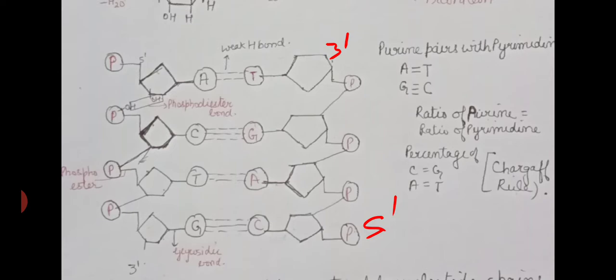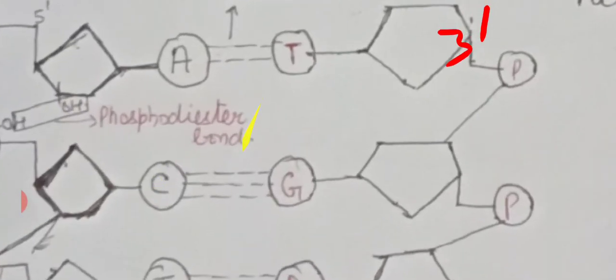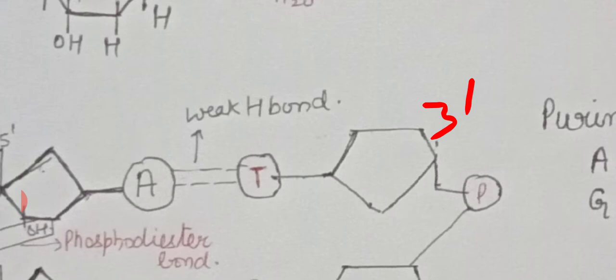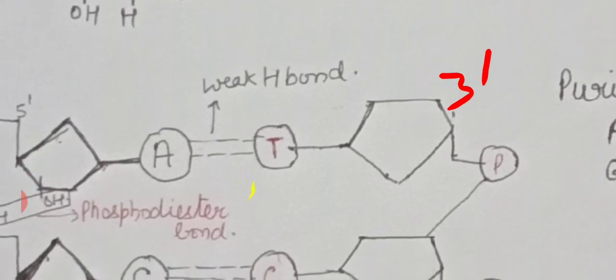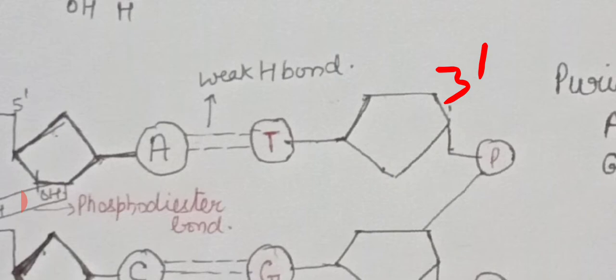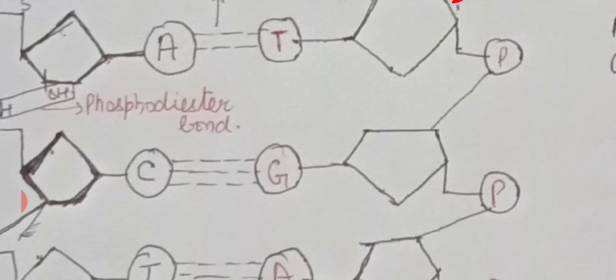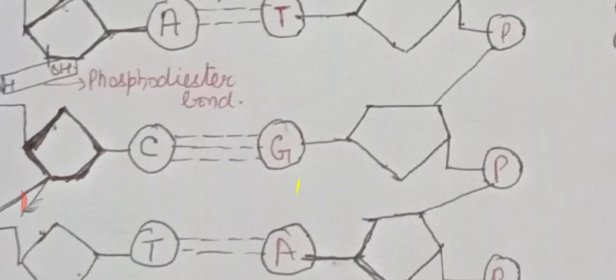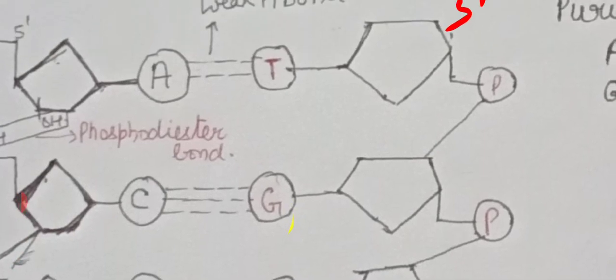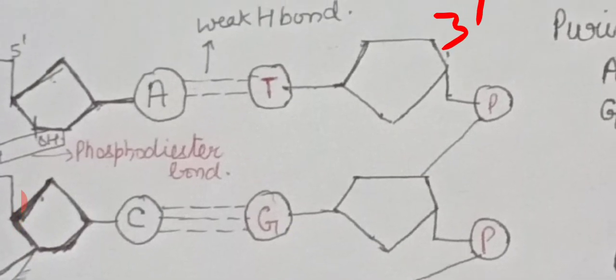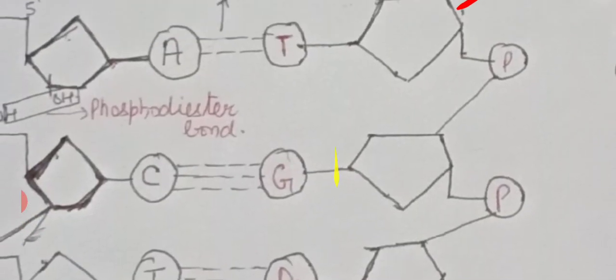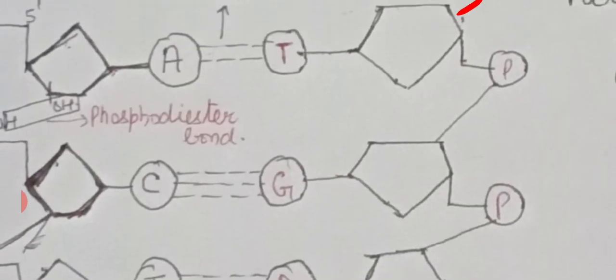The base pairing is held together by hydrogen bonds, which are weak intermolecular forces represented by dotted lines. Adenine and thymine share two hydrogen bonds, while cytosine and guanine share three hydrogen bonds — a triple bond. So adenine-thymine always forms a double hydrogen bond, and guanine-cytosine always forms a triple hydrogen bond.